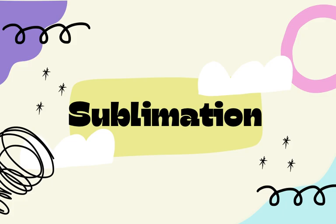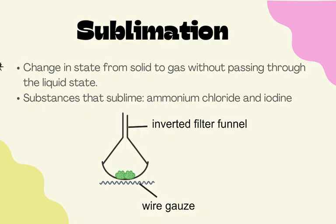Next, let us look at sublimation. The word sublimation means a change in state when you go from a solid to a gaseous state without passing through the liquid state. There are two main substances you need to remember that sublime: ammonium chloride (NH₄Cl) and iodine, which is a purplish-black solid.